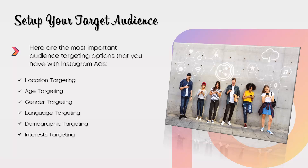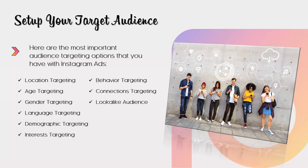Behavior targeting is another area with a lot of choices — for example, a specific job role, purchasing behavior, anniversaries, and a ton more. Connections targeting lets you target people who have connected with your app, event, or page. You also have the option to create a look-alike audience — if you've tapped out your custom audience, Instagram can find people with similar traits to your custom audience.